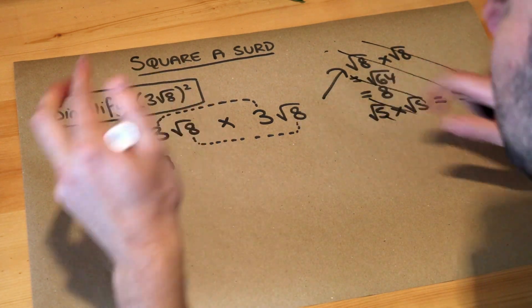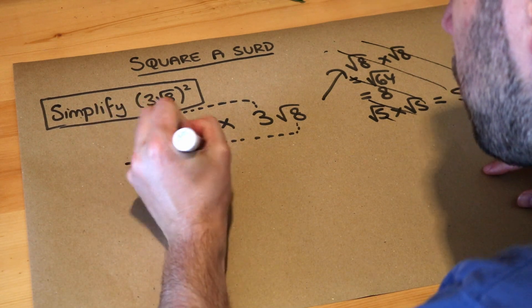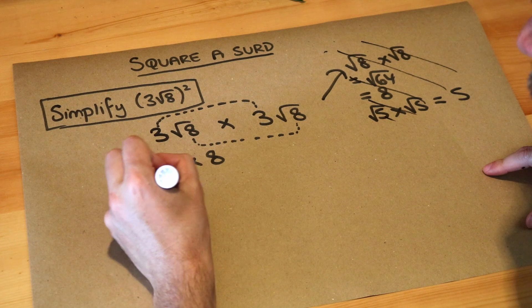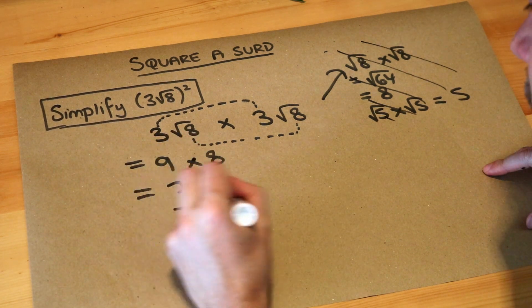So root 8 times root 8 is just 8, so it's 9 multiplied by 8. And what's 9 multiplied by 8? Well it's just 72, and that is the final answer.